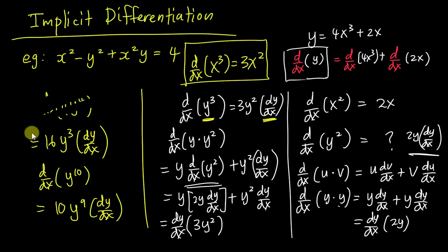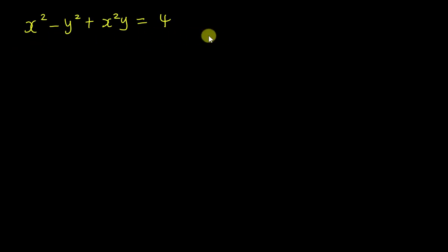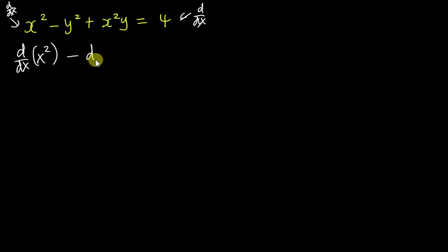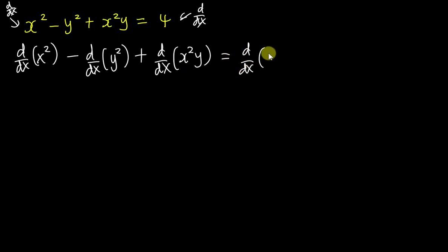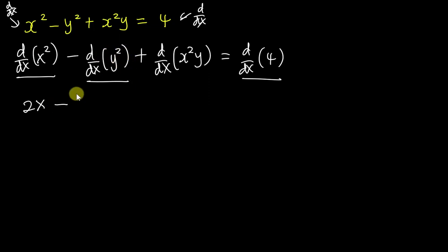Now let's go into the prepared example. To differentiate the equation, add d/dx to both sides for every single term: d/dx of x squared, minus d/dx of y squared, plus d/dx of x squared times y, equals d/dx of 4. When you're used to it you can skip this step, but at the beginning I encourage writing it out. Differentiating x squared gives 2x, differentiating y squared gives 2y·dy/dx, and differentiating a constant gives zero.